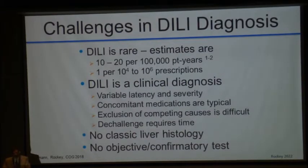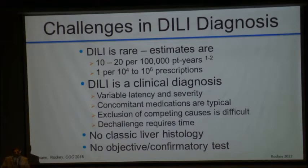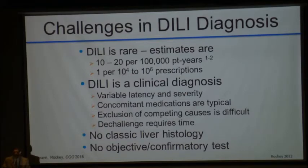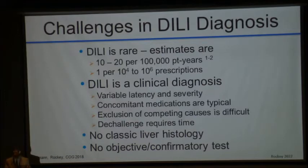Estimates of DILI are somewhere around 10 to 20 per 100,000 patient years — one every 10,000 to 2 million prescriptions. It's a clinical diagnosis. We're going to talk about latency and severity. Concomitant medications are a real problem, especially when trying to pinpoint a culprit. Exclusion of competing causes is oftentimes difficult and requires some expertise. De-challenge requires time, so you don't have that data in hand at first visit. There is no classic liver histology and no confirmatory test.